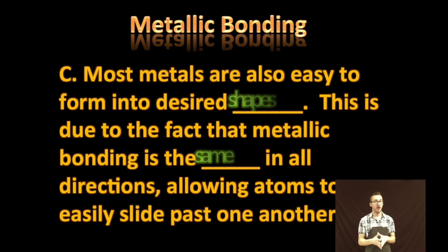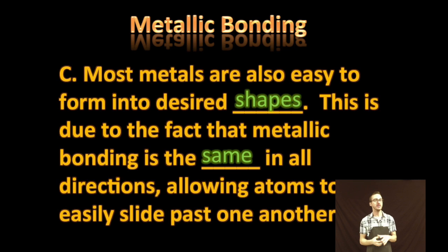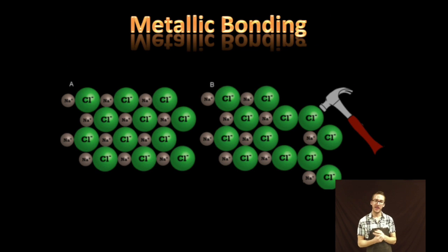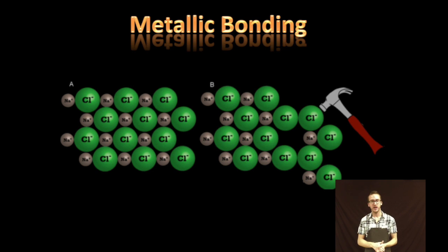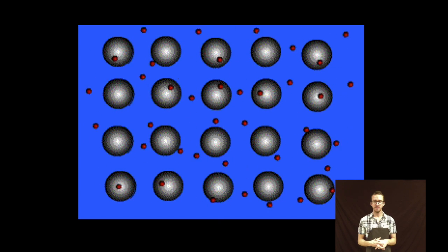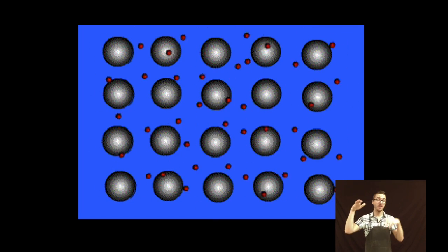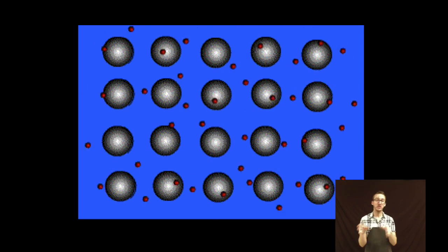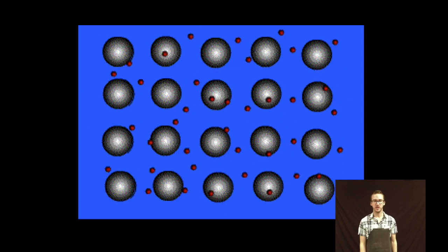Additionally, the electron sea model of metallic bonding allows most metals to be easily formed into desired shapes. This is because metallic bonding is the same in all directions, allowing the atoms to easily slide past one another. Compare this to an ionic compound: in an ionic crystal lattice, if you hammer on it, the like charges will line up and then separate. In metallic bonding however, the bonding is the same in all directions — hammer on it and nothing really changes, because you don't have like charges lining up and causing repulsion.